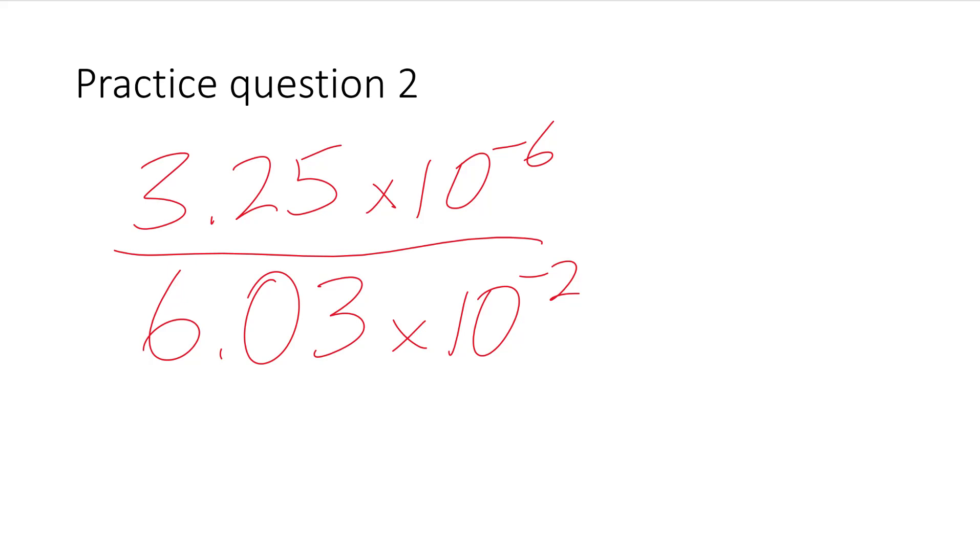So now that you've tried one question and seen the answer, go ahead and try this question: 3.25 times 10 to the negative 6 divide by 6.03 times 10 to the negative 2. Pause the video and try it out, and then see if you got the right answer.